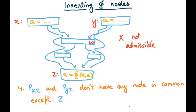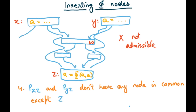If pxz goes through w and pyz also goes through w, they share a non-z node in common, so we don't need a phi node at z. However, if there exists another path from x to z that doesn't go through w or any other node that pyz passes through, then we would need a phi node at z for a.